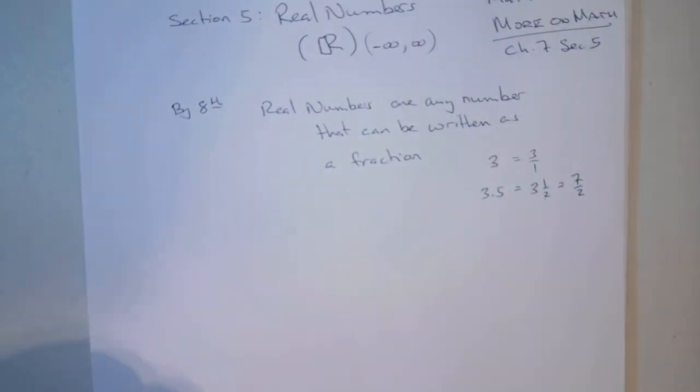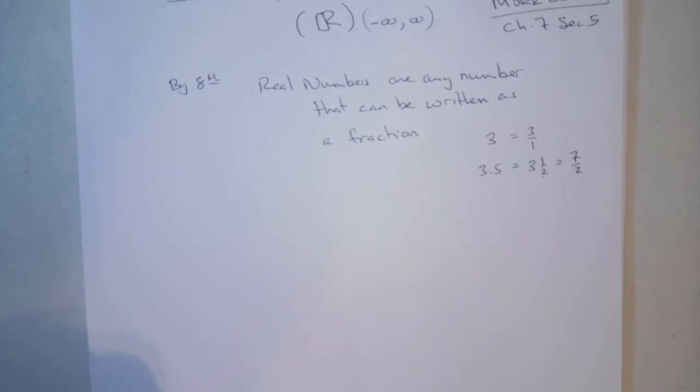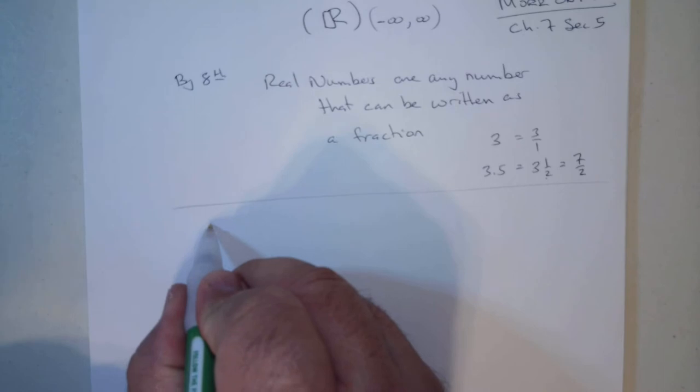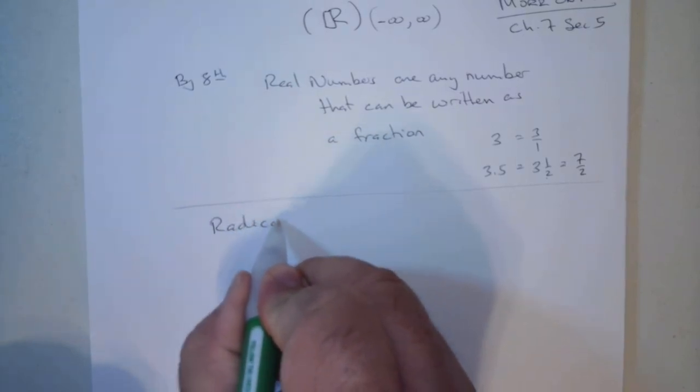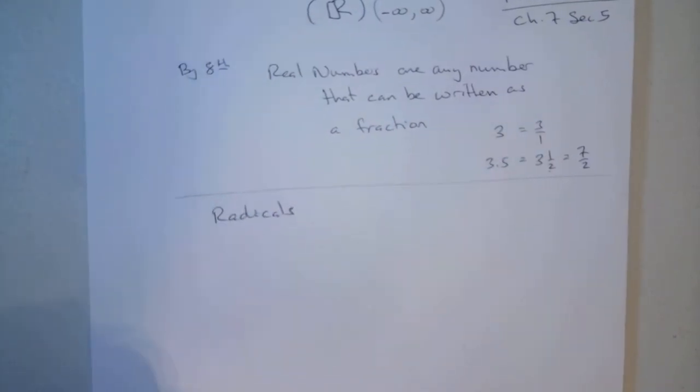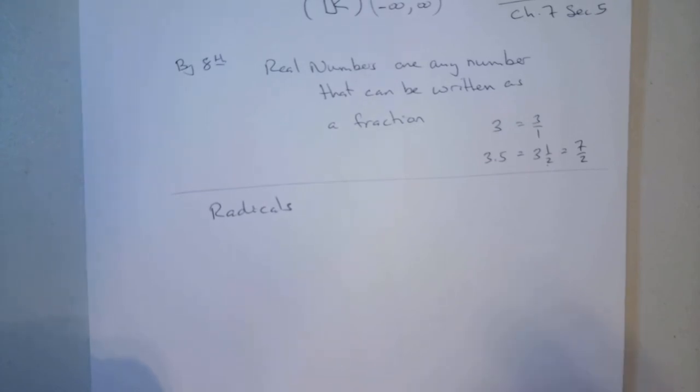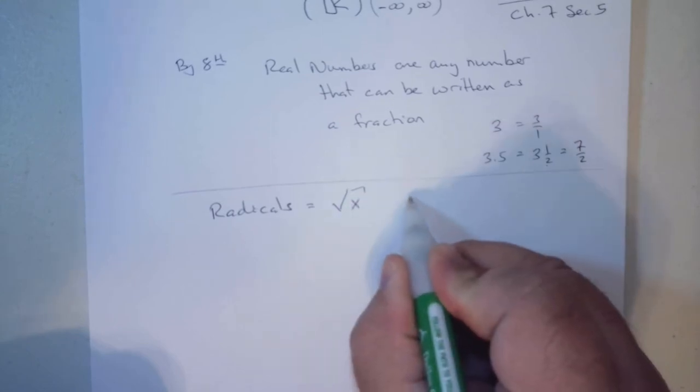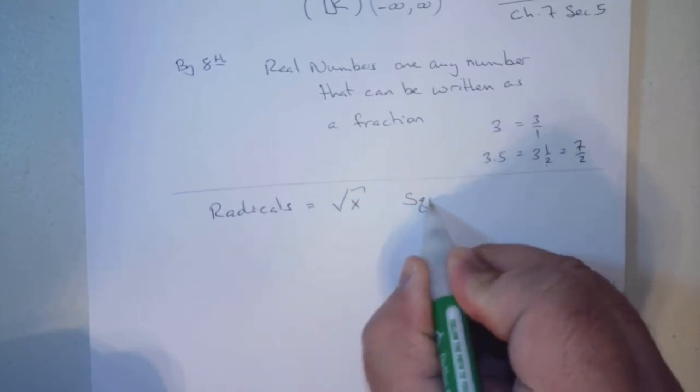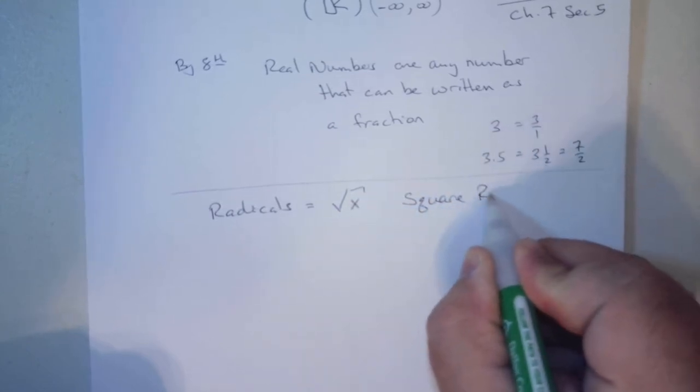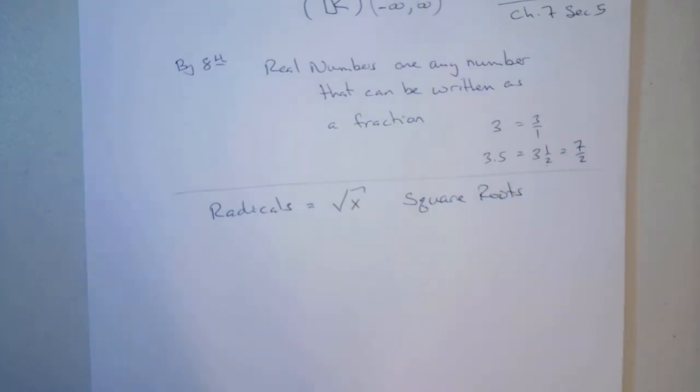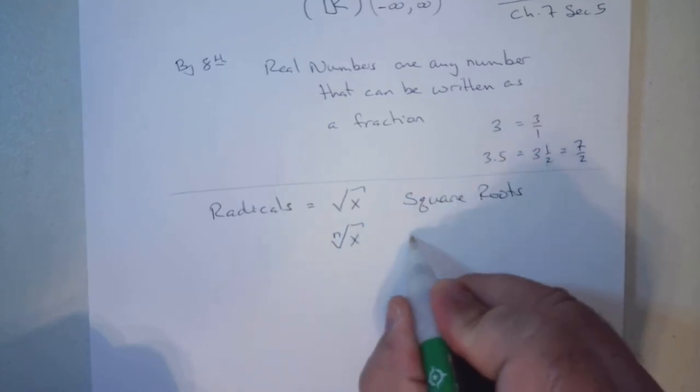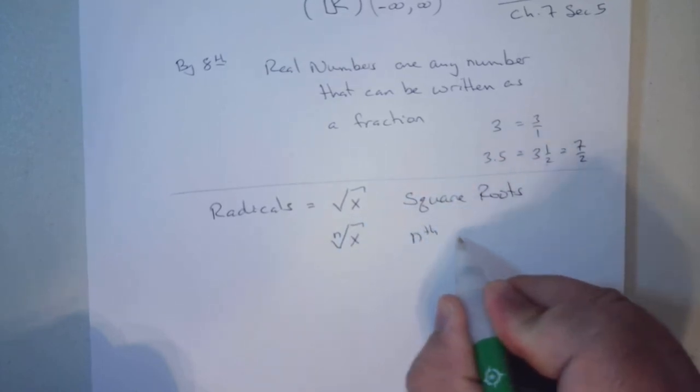More importantly, we're looking at the radicals. Radicals are what we call like square roots or anything bigger. This is called an nth root.